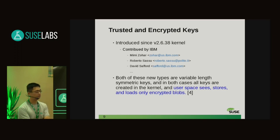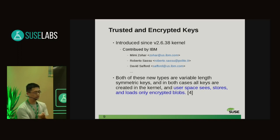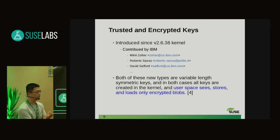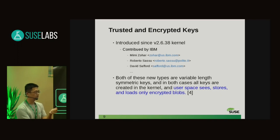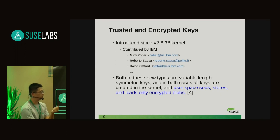The kernel generates these keys in kernel space. The key can be exposed to user space by the keyctl tool, and user space can take the key and store the blob anywhere, but no one knows the real key content inside the encrypted block.